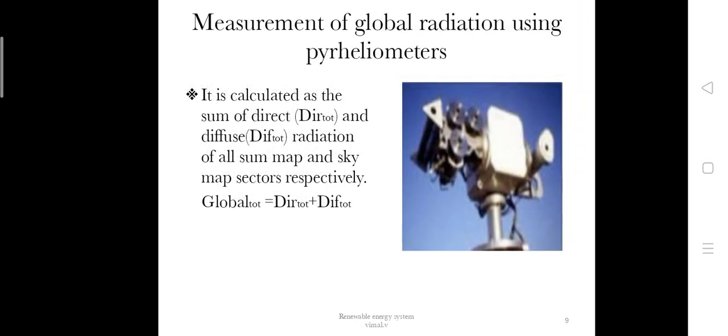The measurement of global radiation using pyranometers is calculated as the sum of direct total and diffuse total radiation of all sun map and sky map sectors respectively. Global total equals direct total plus diffuse total.